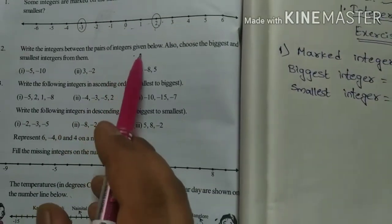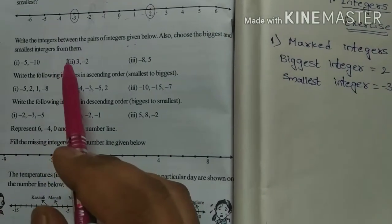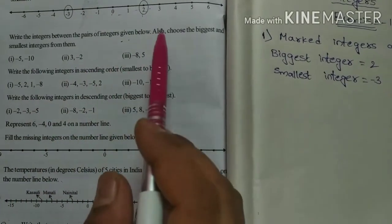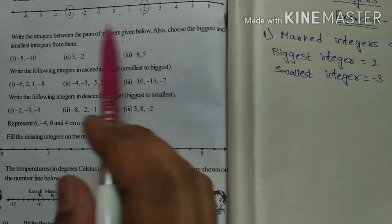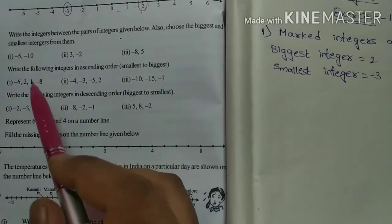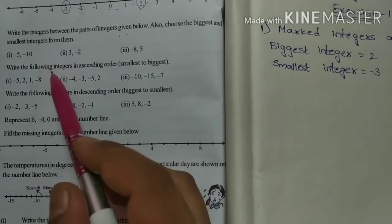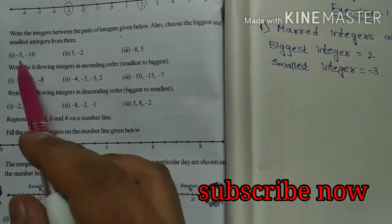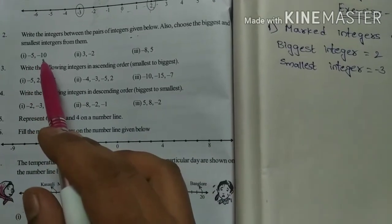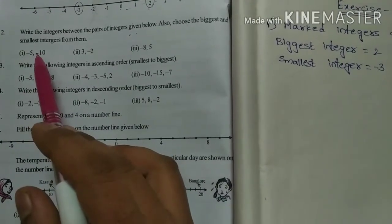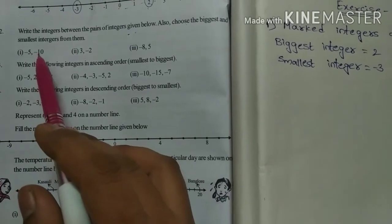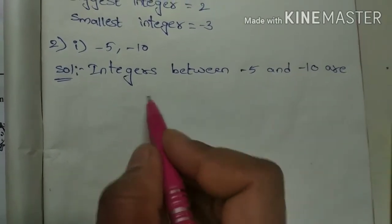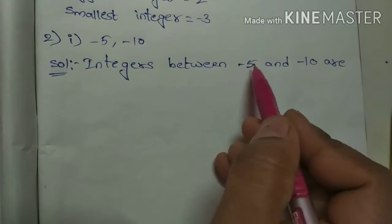Now let us go to the second problem: write the integers between the pair of integers given below. What they are asking is you should write the integers in between this pair of integers. Also choose the biggest and smallest integer from them. First one: minus five comma minus ten. In between these two integers, we should write the integers.